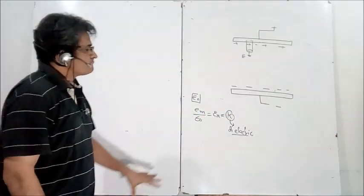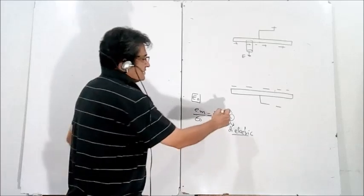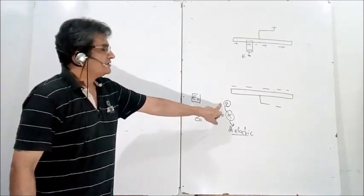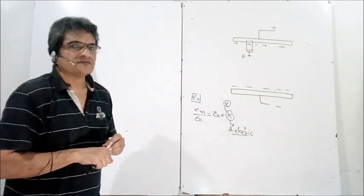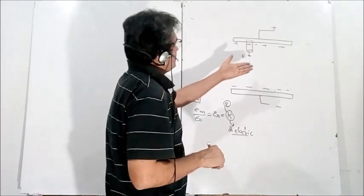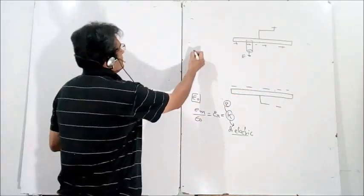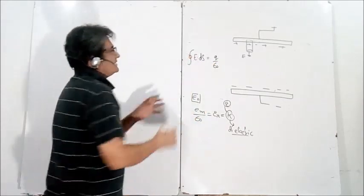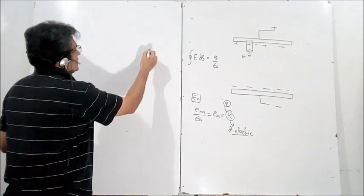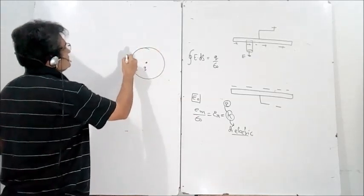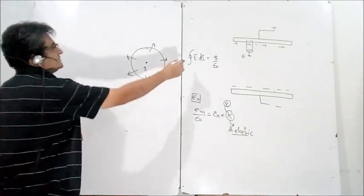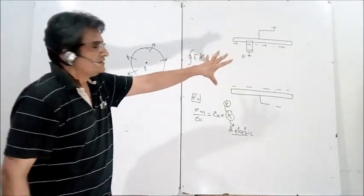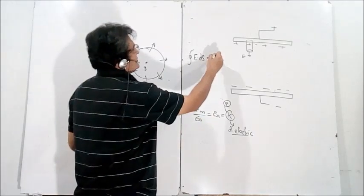In Irodov you will find K is written as epsilon, so don't get confused with epsilon naught — it is still the relative permittivity. Problems in Irodov are very good as far as dielectric problems are concerned. The Gauss law is: the integral of E dot dS equals Q upon epsilon naught. If you take a charge Q and a spherical Gaussian surface, you get the electric field at that point. This is for the case when there is no dielectric and Q is the free charge.